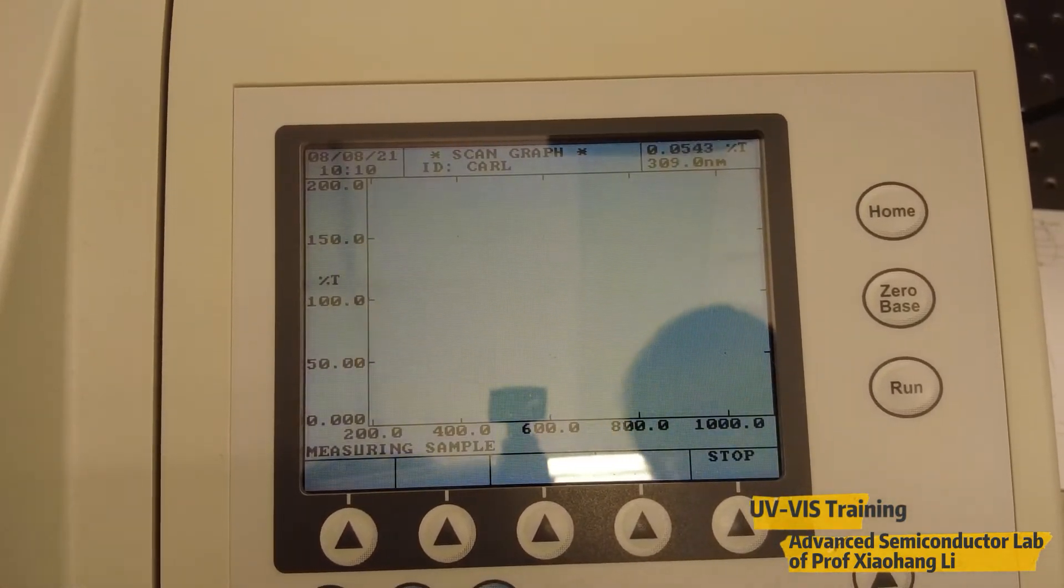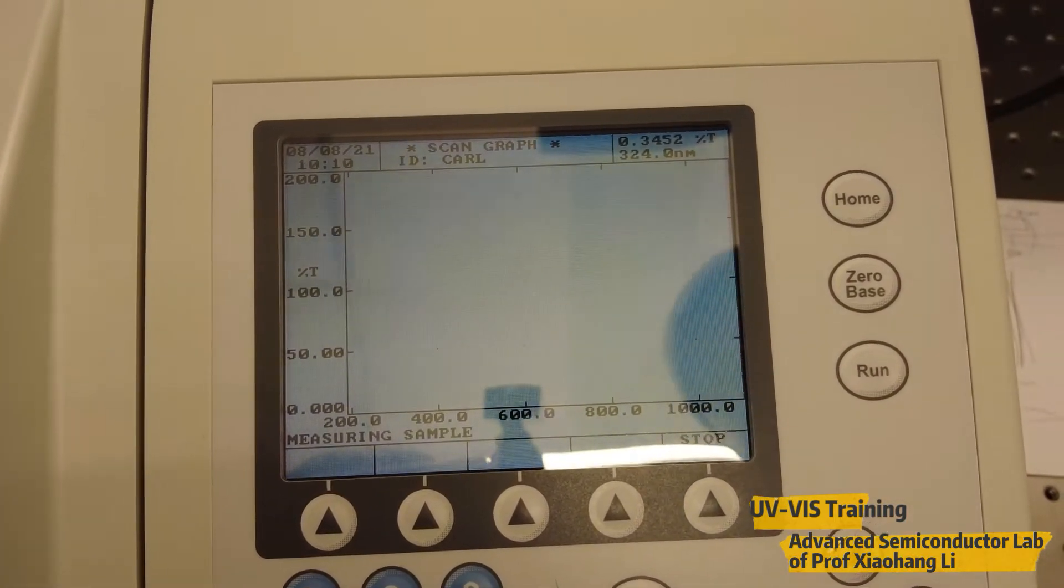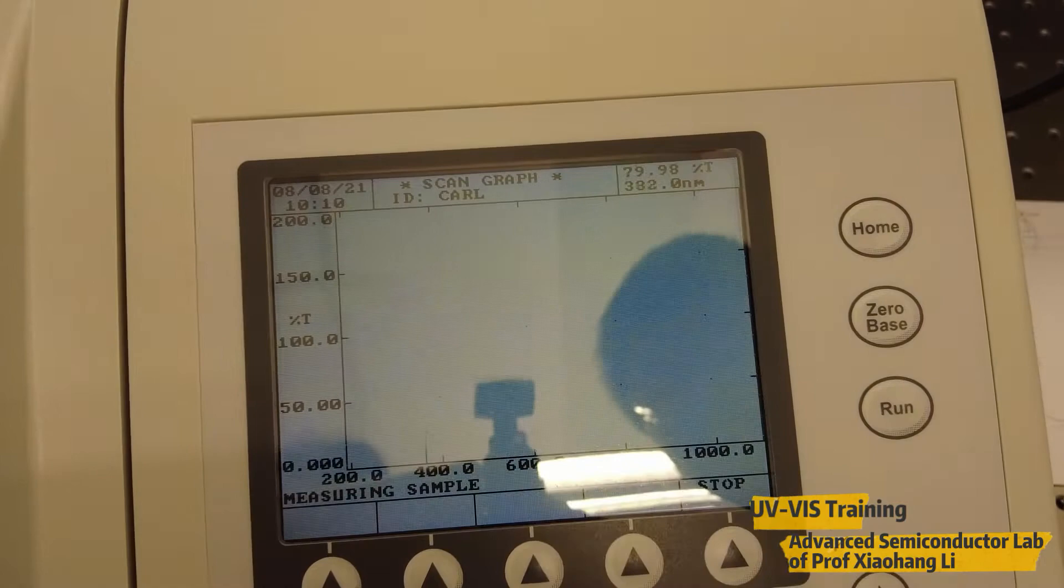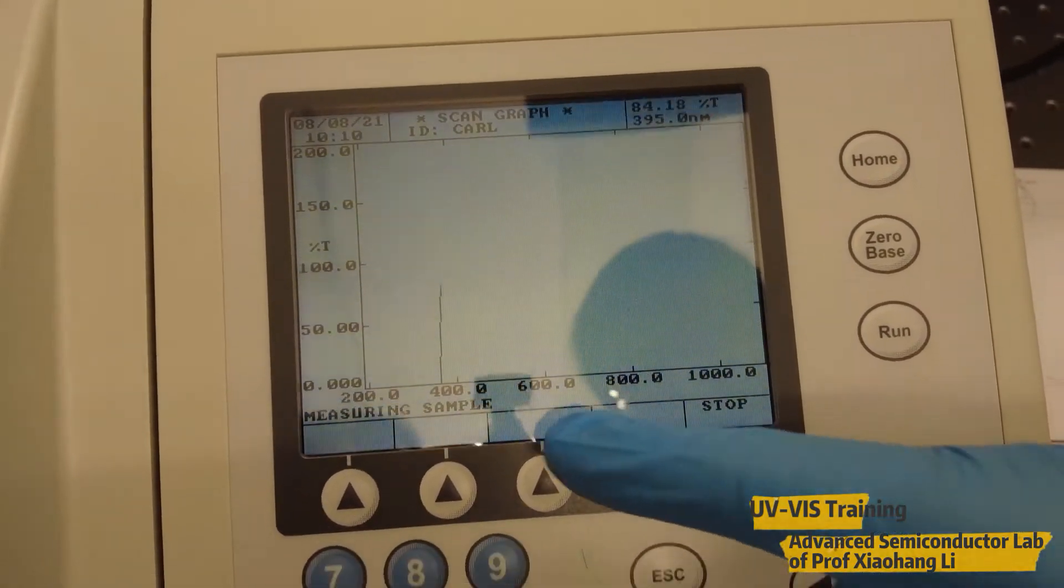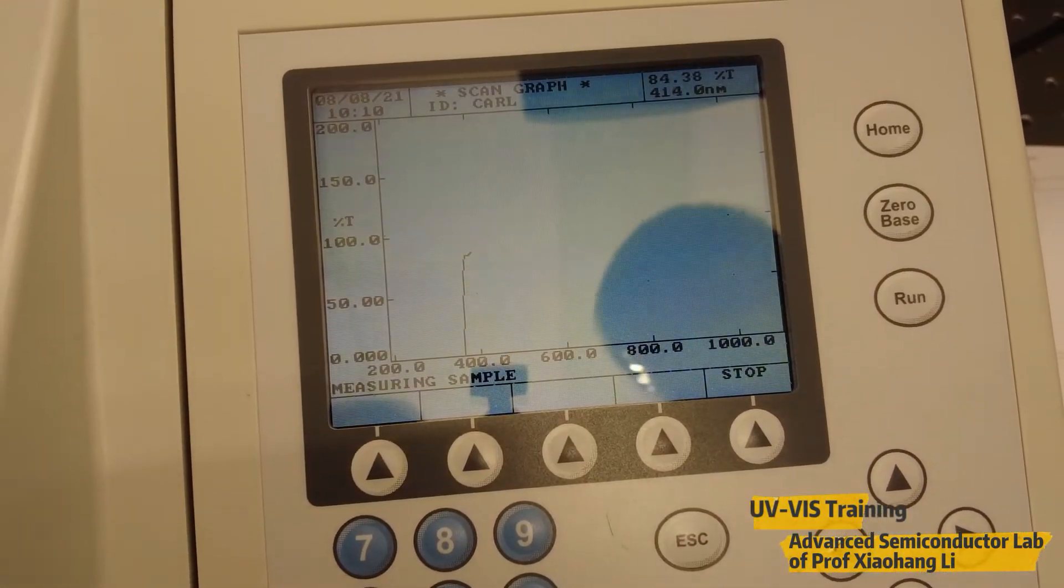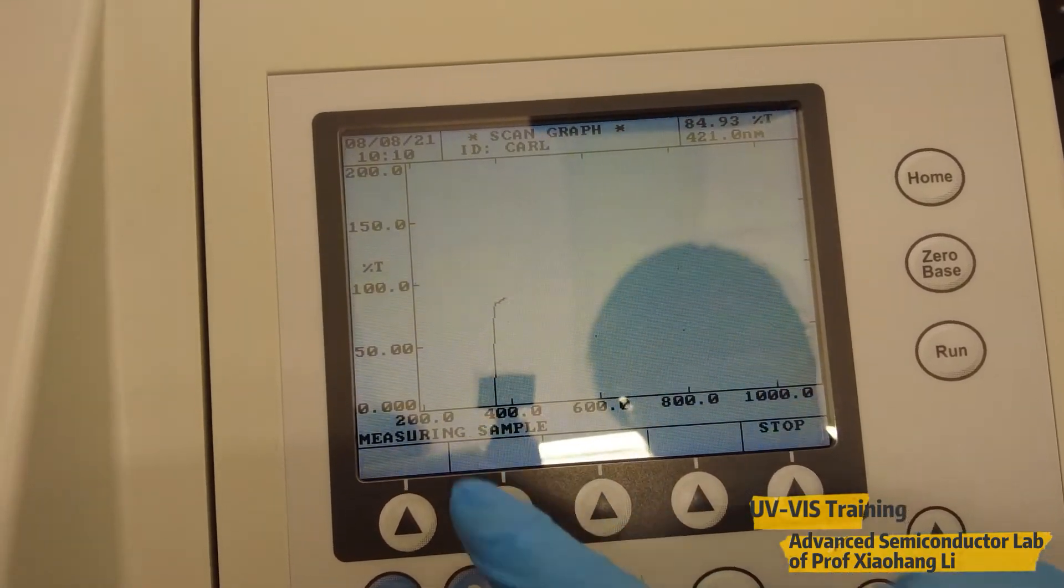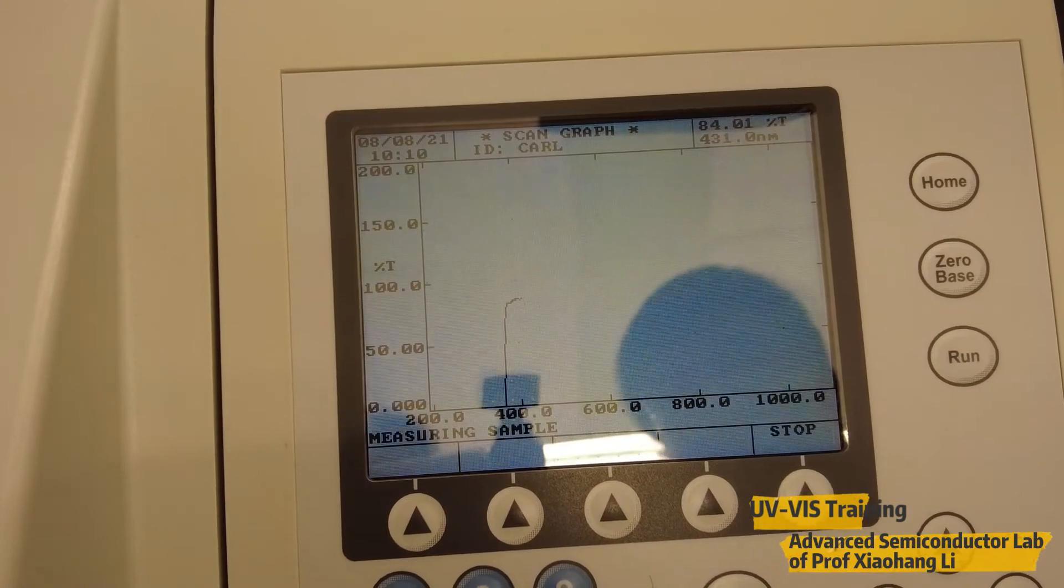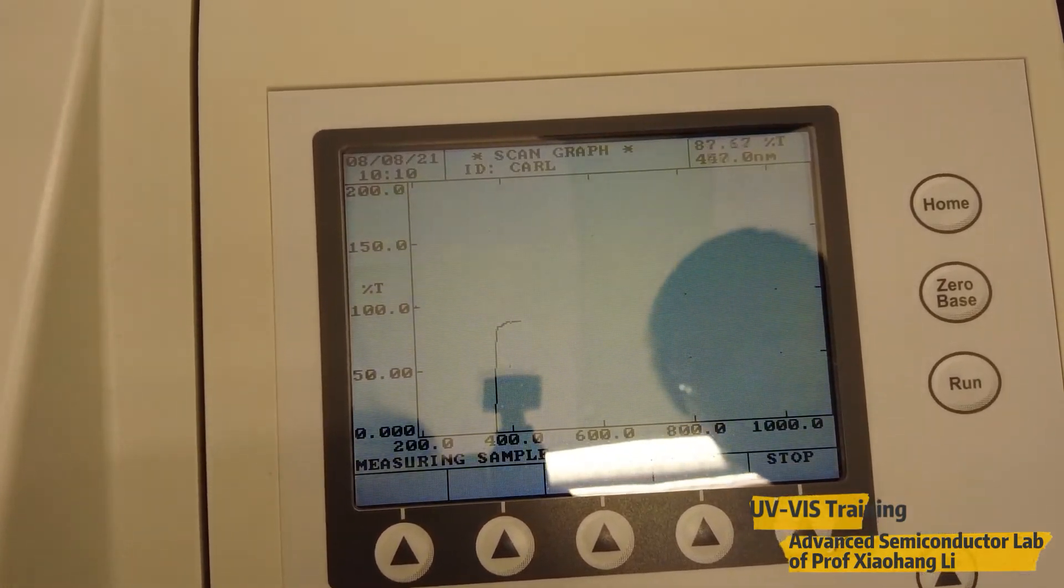Gallium nitride has an absorption edge at around 365 nanometer. So we can see here there's a change of the lamp. You can see there's a very sharp increase of the intensity. This means that below this wavelength there's no absorption. Starting from this wavelength there's a huge absorption. This is the absorption edge.